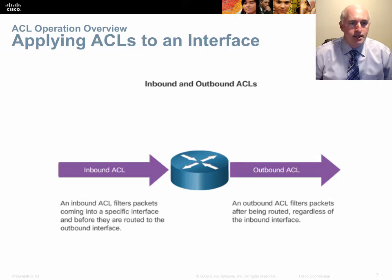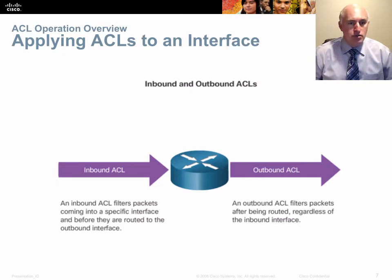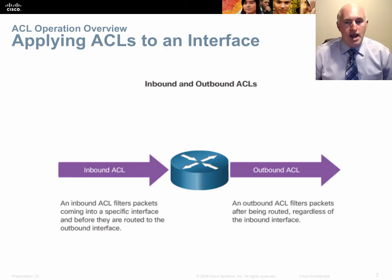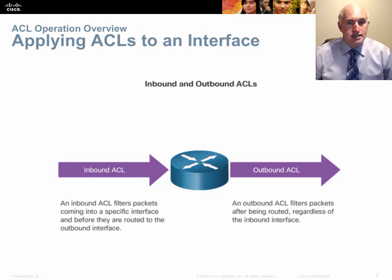ACLs can be applied either inbound or outbound. There are strategic advantages to applying an ACL to the inbound interface because the ACL is compared prior to routing, saving processor and RAM resources. Packets arriving on the incoming interface are compared to the list before the router looks up a destination and routes it out. On outbound, the packet has already been routed and is sitting in the queue waiting to go out.